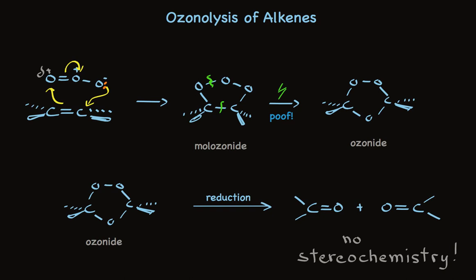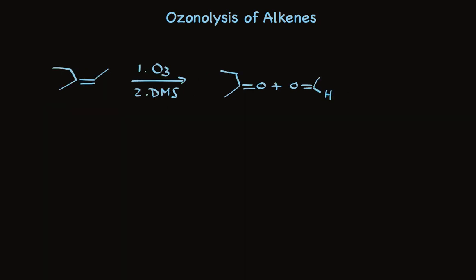Okay, this is a simple reaction that has a complicated mechanism. Let's look at some examples. When an alkene, such as the one I've shown here, is treated with ozone and followed by a reducing agent, we make a ketone and an aldehyde.